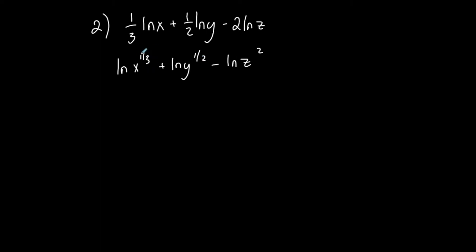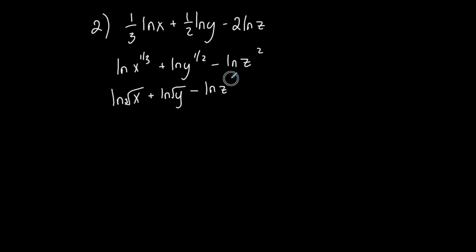I'm going to rewrite this because a one-third rational exponent can be rewritten as a radical expression — this is a cube root function. The denominator of the exponent is the index of the radical. So x to the one third becomes the cube root of x, and y to the one half becomes the square root of y. This shows how you can express things in rational or radical form.